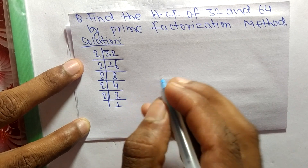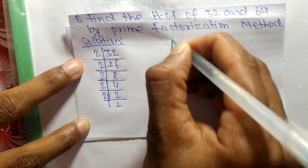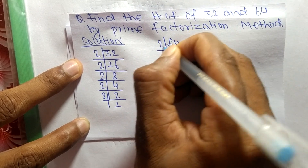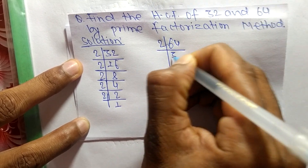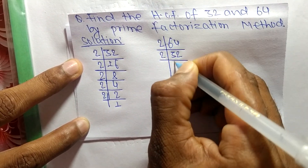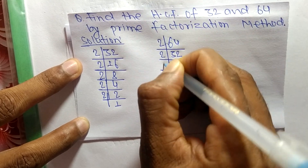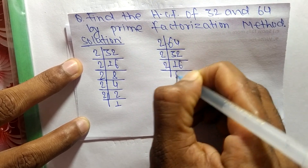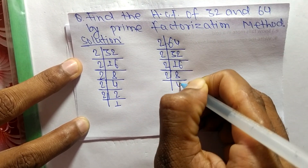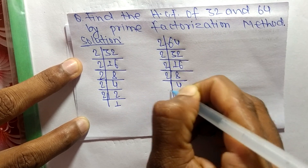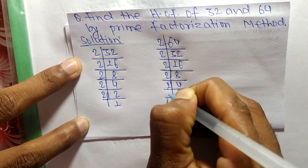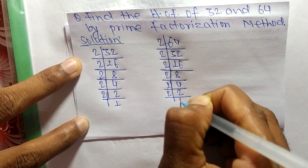Now the prime factors of 64 are: 2 times 32 means 64, 2 times 16 means 32, 2 times 8 means 16, 2 times 4 means 8, and 2 times 2 means 4.